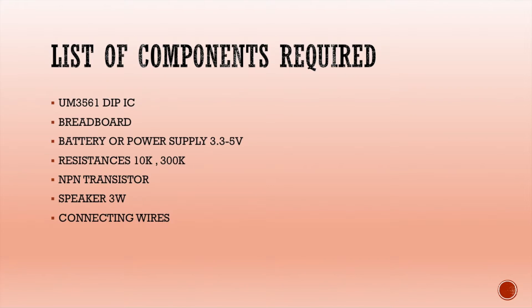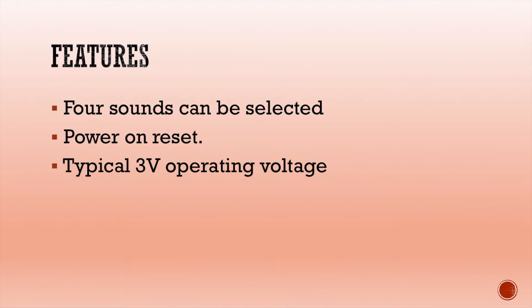What are the various features of UM3561? Four different types of sounds can be generated. There is a power-on reset facility available, which means when we disconnect the battery or power supply, the system will automatically restart. Typically, a 3-volt battery is used to operate the device. You can also use a 5-volt battery. The maximum voltage the device can withstand is 5 volts.